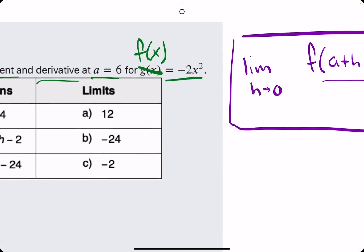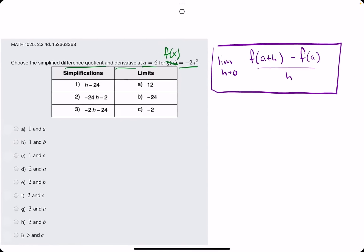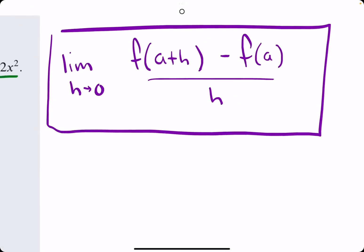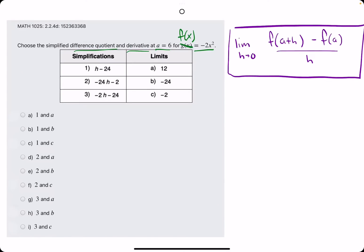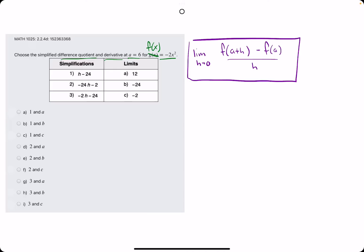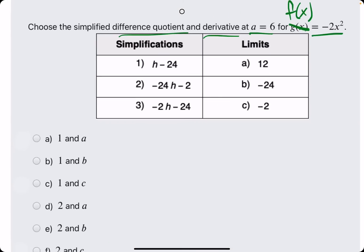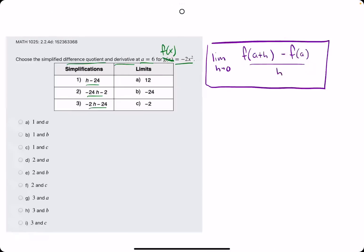As in the other difference quotient problems, I'll go ahead and call this f of x just to make it more consistent. So the first thing we're going to do is find the difference quotient at a equals 6 for this function. And we're not given an h value to plug in, so once we simplify what we have, we'll still have everything in terms of h.